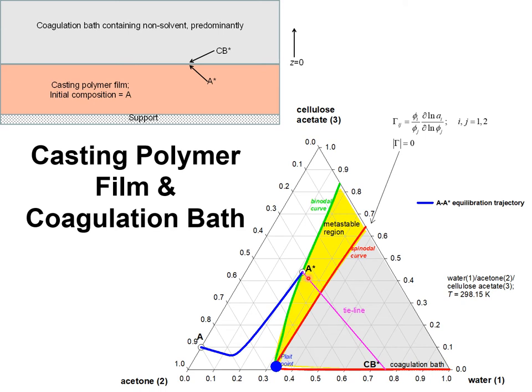The compositions at the end of the tie line are in thermodynamic equilibrium, requiring that the activities of each of the components are equal on both sides.